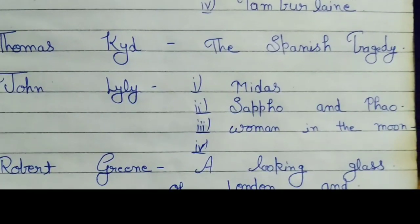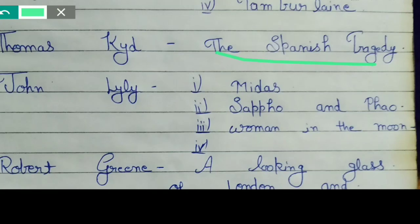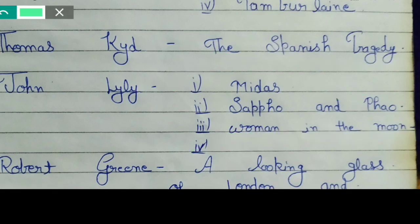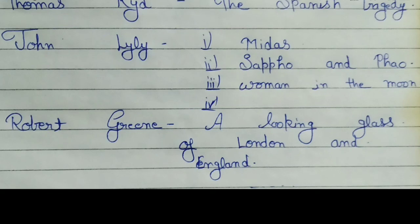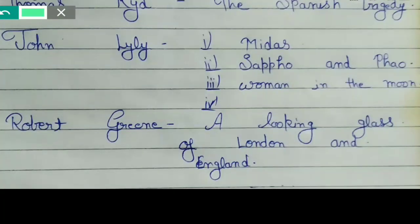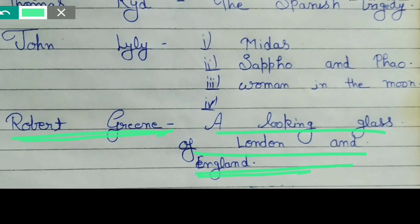Then there is what Thomas Nashe wrote — some of his works as well. Robert Greene's works include A Looking Glass for London and England, among others. Keep in mind that in examination answers should not just list works without context. So friends, I hope you have understood the University Wits. In the next video you will see more. Thanks for watching this video, thank you.